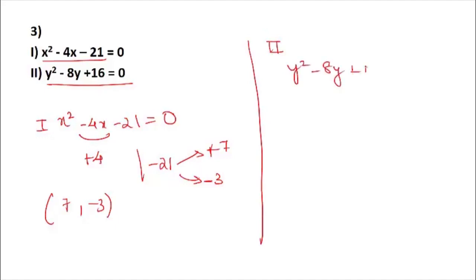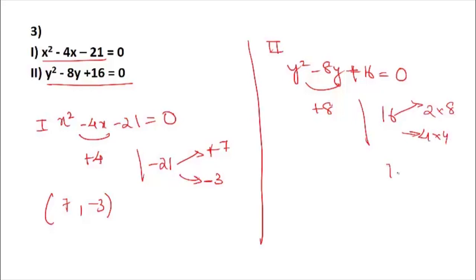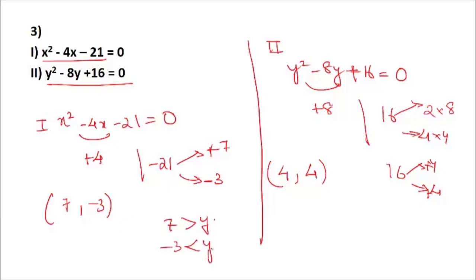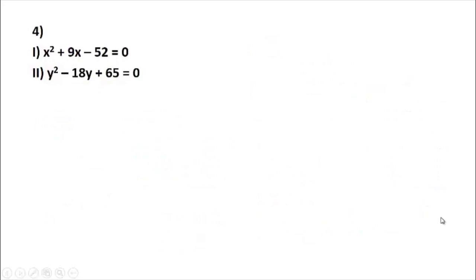Second equation: y² − 8y + 16 = 0. Change the sign of −8 to get 8. Break 16 as 4 × 4 = 16; since 4 + 4 = 8, both are positive, so y = 4 and y = 4. Comparing: x = 7 is greater than y = 4, but x = −3 is less than y = 4. No consistent relation — answer is 'can't be determined'.